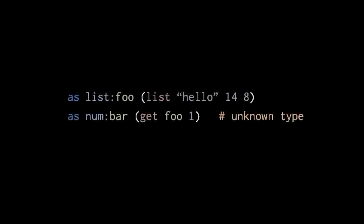A problem that comes up in static languages is how to deal with collections like lists and dictionaries. If the members of lists and dictionaries can be of any type, then when we retrieve a member, it can't be known ahead of time — before the program is actually run — what type of thing that operation is going to retrieve. For example, if we create a list and assign it to a variable foo, and then retrieve the item at index 1, the get operation might return a value of any type. That just doesn't fit in a static typing system, which requires every expression's type to be known before the program runs.